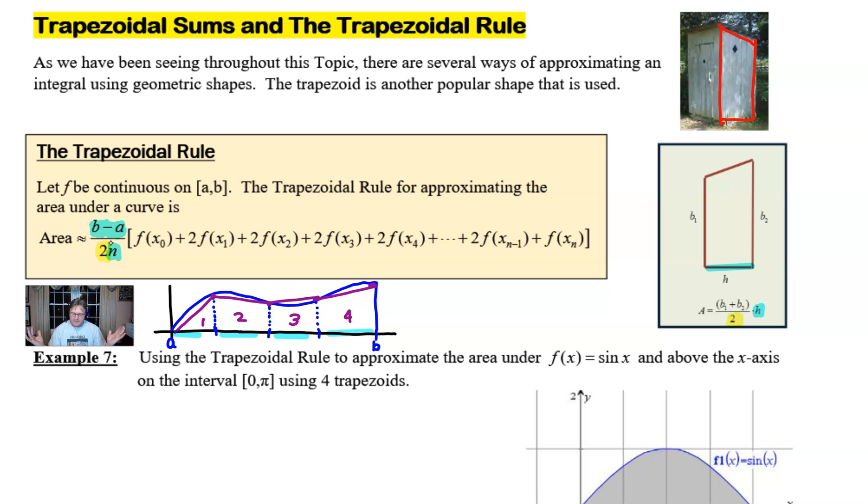So, the only thing that's left is all of the sums of the bases. Now, you're going to notice that these bases kind of have some inconsistencies to them. Notice how there's these coefficients of 2 in front of the interior values. But the 2 values here on the outside do not have that coefficient of 2. Well, that's easily explained.